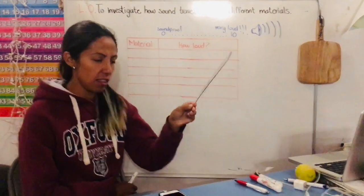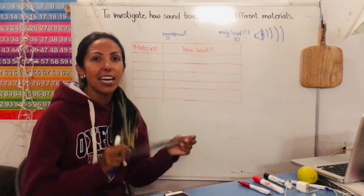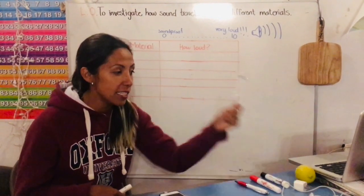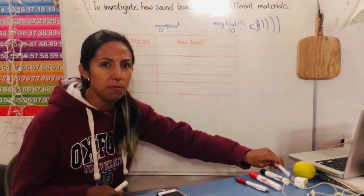So we're going to need our ruler, a piece of paper and our pencil. I know this is a pen but you can use a pencil please.